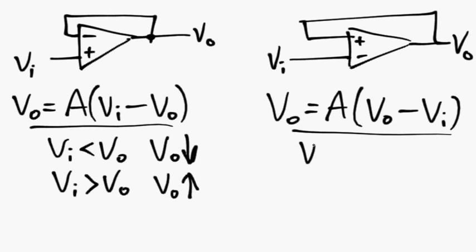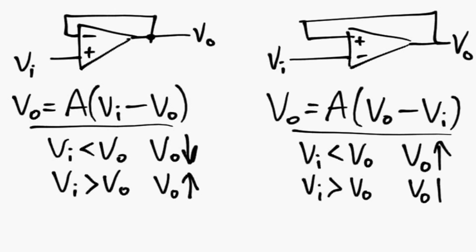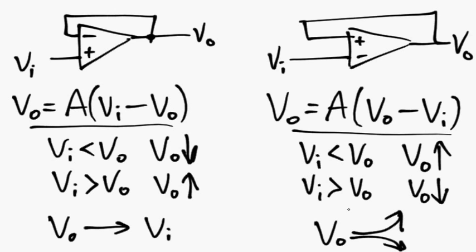In this other case however if VI is slightly smaller than Vout then Vout is going to be pushed towards a very large positive number. And vice versa if VI is larger than Vout, Vout is going to be pushed very far down. So where this one Vout is going to be driven to be equal to VI, in this case Vout is going to go very very high or very very low depending on whether it was initially higher or lower than VI.